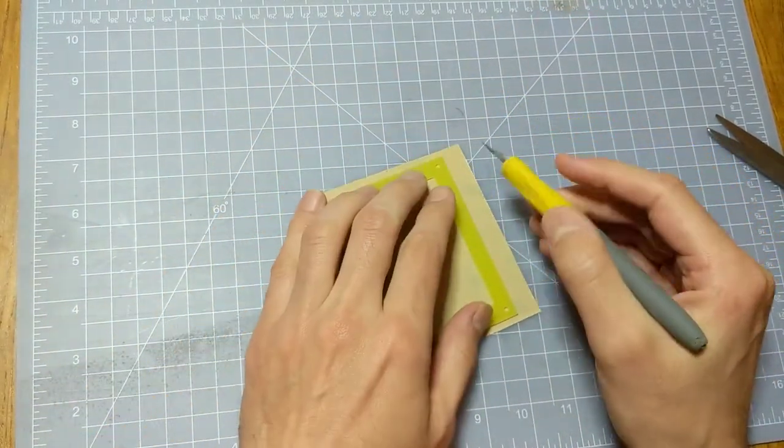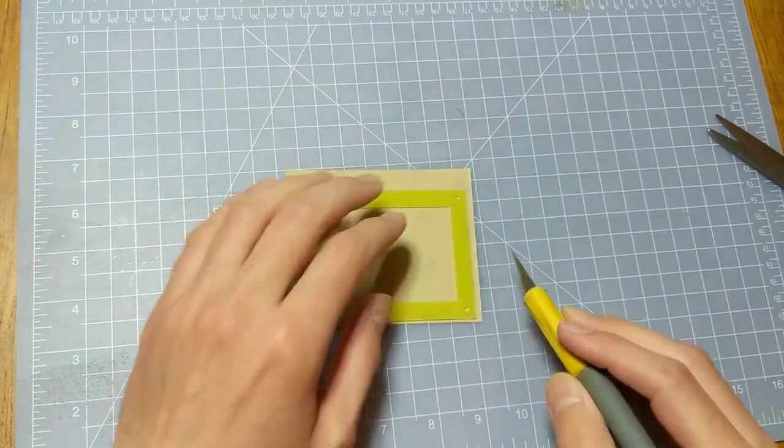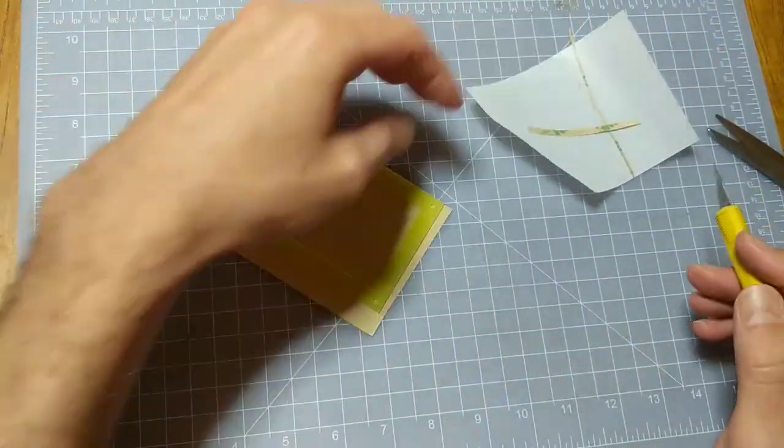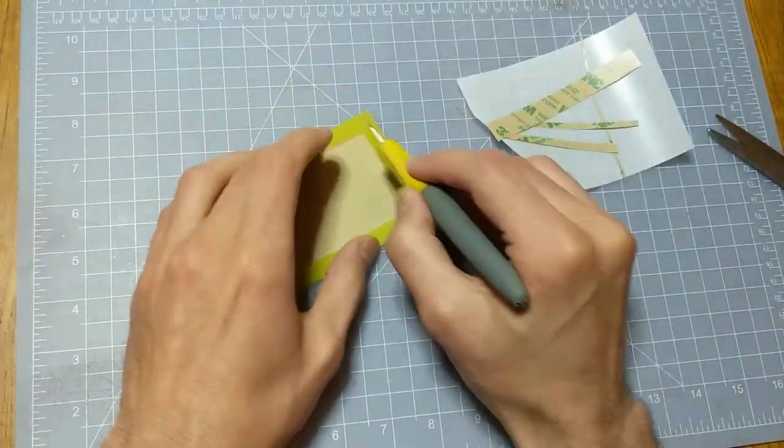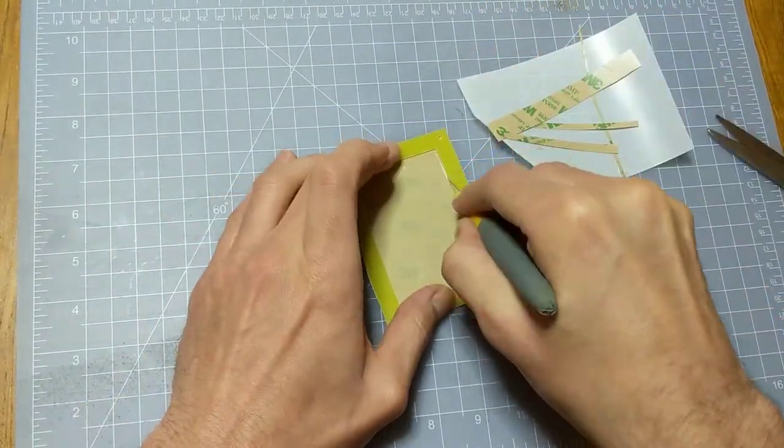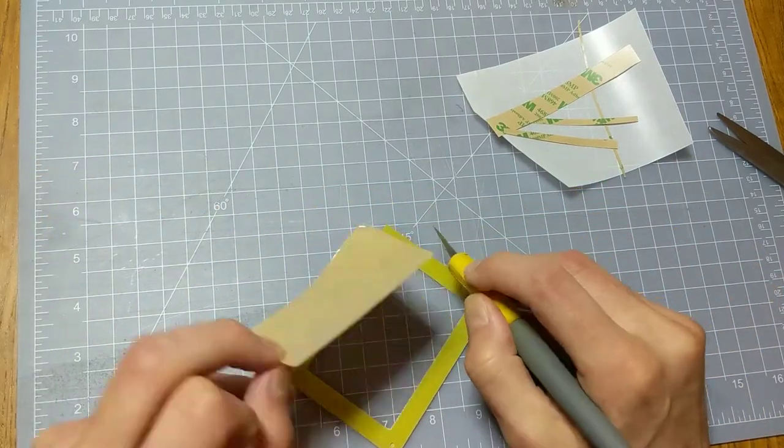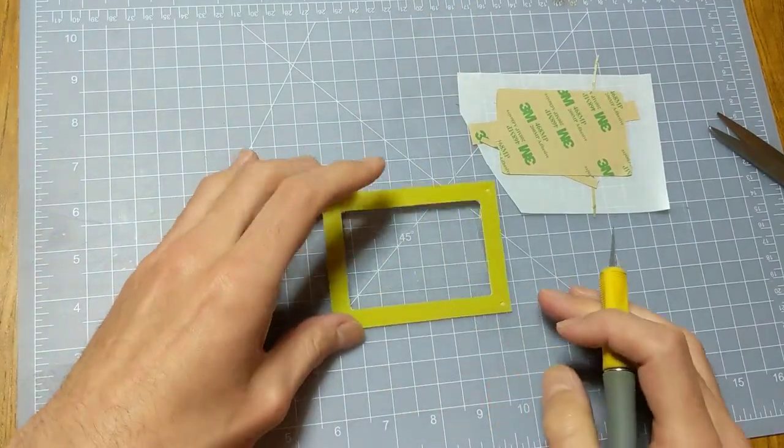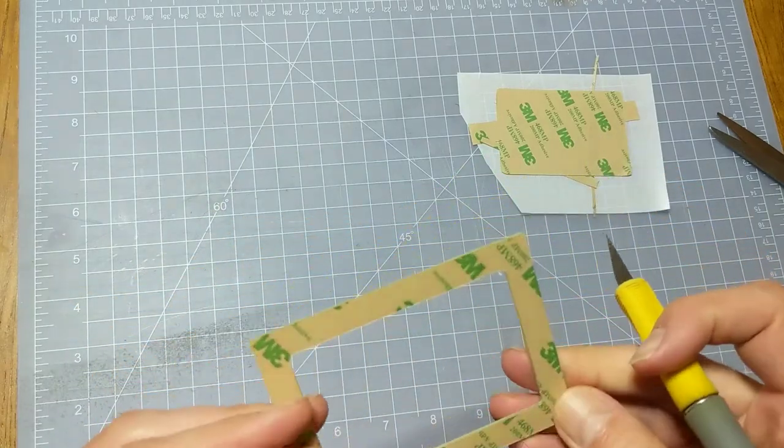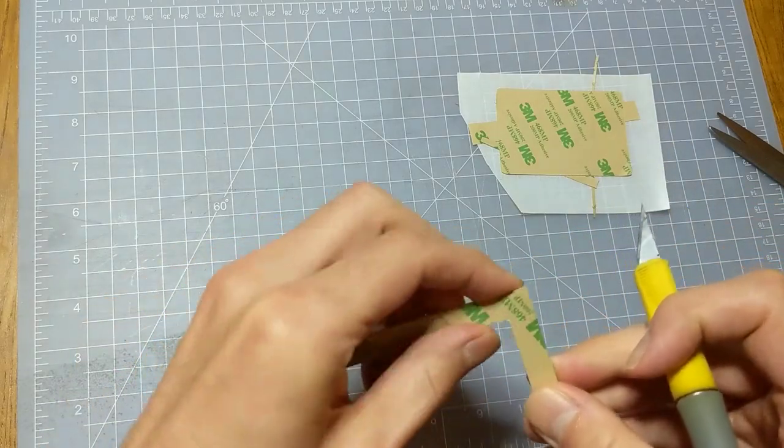Once that's pressed on tight, just cut off the excess adhesive from the frame. There may be a little bit of excess adhesive sticking out onto the edge. You can usually clean that off pretty easily by just rubbing it with a finger.